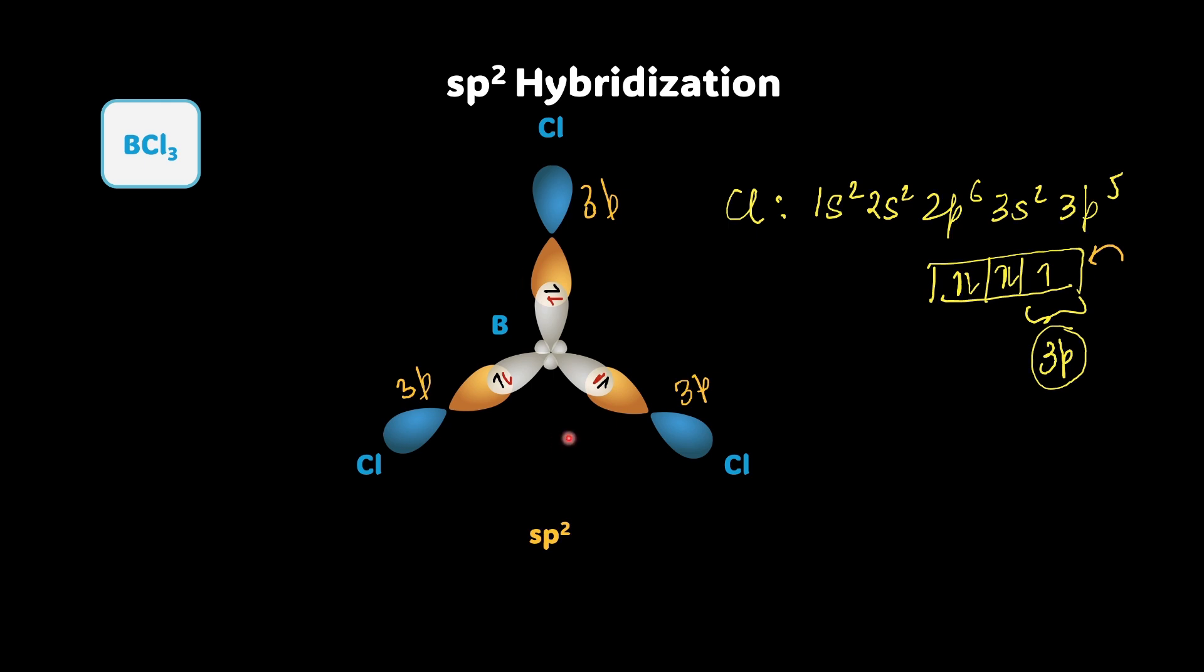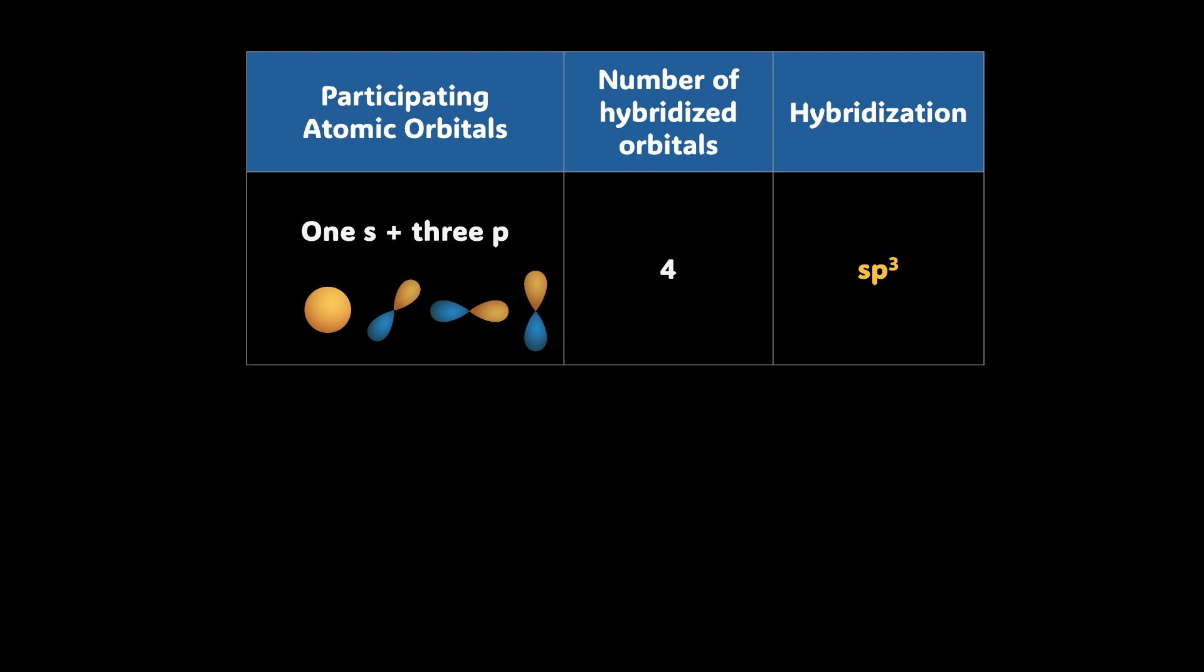Now let's move on to the next one. So here now we have sp3 hybridization. Let's see how we get this tetrahedral structure. In this case, one s orbital and three p orbitals, that means all the three p orbitals, px, py, pz, combine to form four sets of sp3 hybrid orbitals.